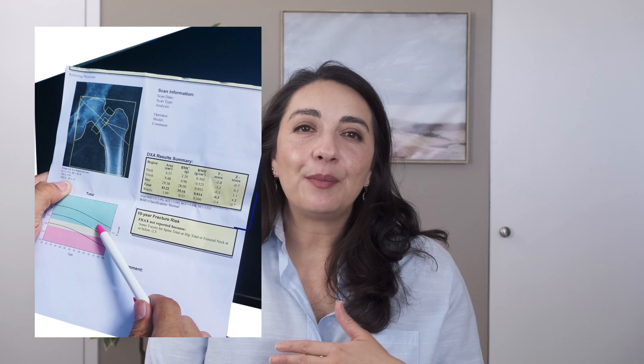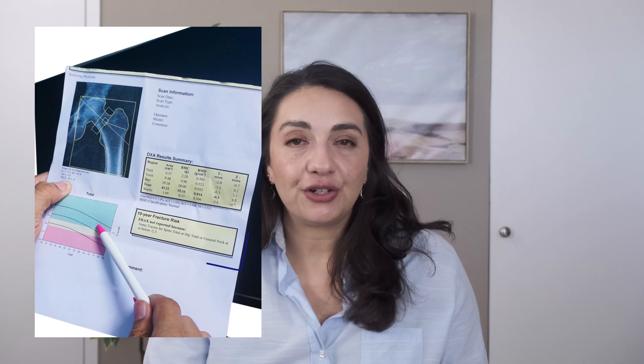Now, there is another number you may hear about that we use to determine next steps, and that's the FRAC score. This is simply a number calculated utilizing a bunch of data about you — your age, your family history, whether you smoke, your medical history, and your bone density as measured by the DEXA. Based on all this data, your FRAC score can calculate what your risk of a fracture is in the next 10 years. If someone has a very high FRAC score, even if their bone density is technically not osteoporosis — perhaps they have osteopenia — they may still need prescription medication, because the goal of all of this is to prevent fractures.